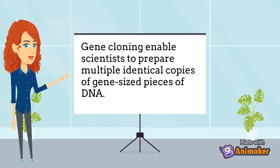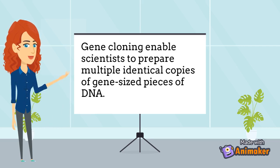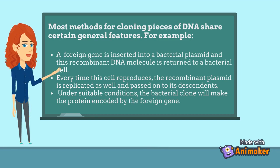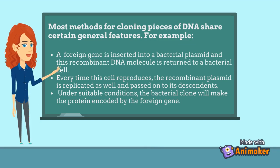Gene cloning enables scientists to prepare multiple identical copies of gene-sized pieces of DNA. Most methods for cloning pieces of DNA share certain general features. For example, a foreign gene is inserted into a bacterial plasmid and this recombinant DNA molecule is returned to a bacterial cell. Every time this cell reproduces, the recombinant plasmid is replicated as well and passed on to its descendants.